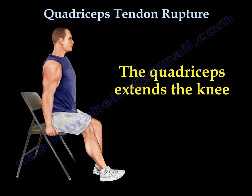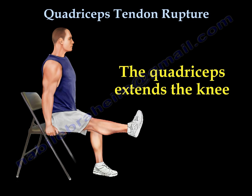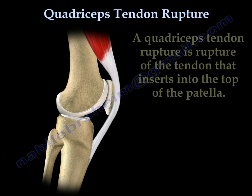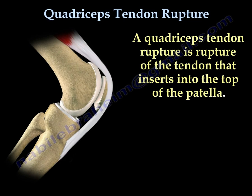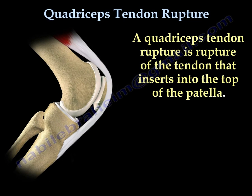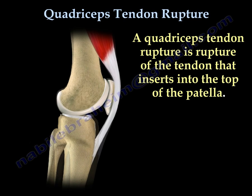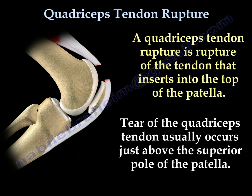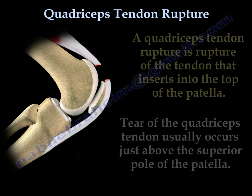The quadriceps extends the knee. A quadriceps tendon rupture means it is a rupture of the tendon that inserts at the top of the kneecap. The tear usually occurs just above the superior pole of the patella.